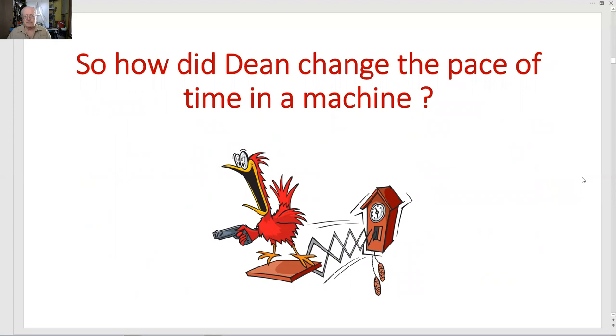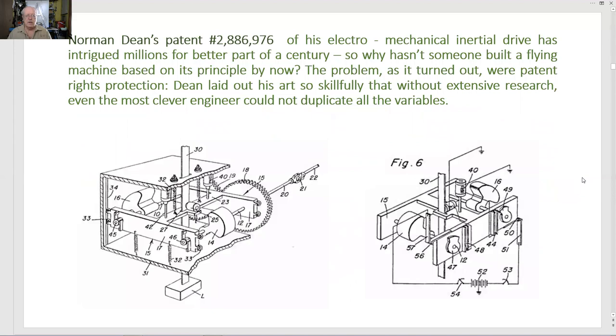So how did Dean change the pace of time in a machine? Norman Dean's patent, 2886976, of his electromechanical inertial drive, has intrigued millions for a better part of a century. So why hasn't someone built a flying machine based on its principle by now? The problem, as it turned out, was patent rights protection. Dean laid out his art so skillfully that without extensive research, even the most clever engineer could not duplicate all the variables.